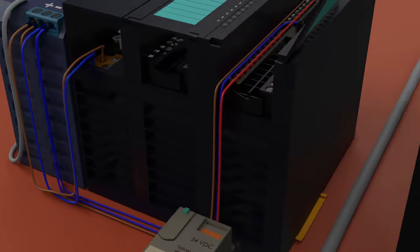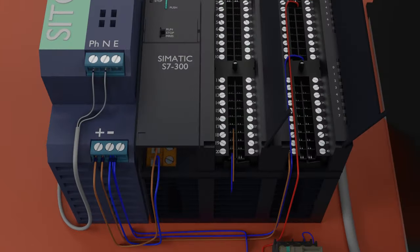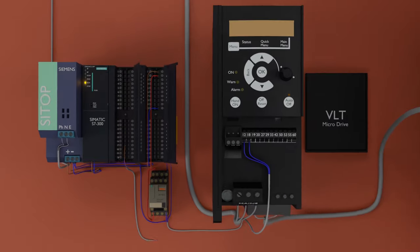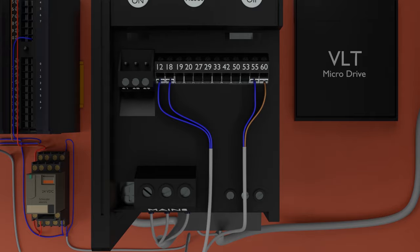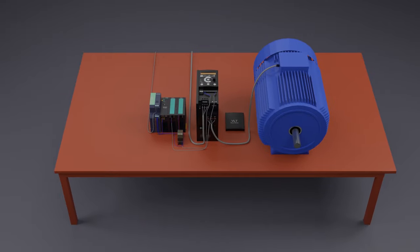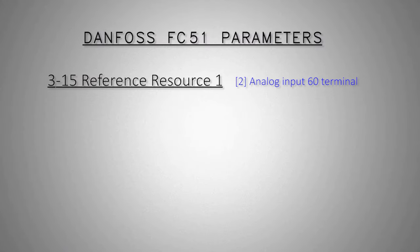Analog output signal wiring is very easy. We will connect analog output terminals 17 and 20 to the analog input terminals 55 and 60 of the VFD. Now the wiring is completed. Let's discuss a few parameters of the VFD which we have to change to configure the VFD's analog input as a speed reference. We can use parameter 3-15 reference source to configure this analog input as a frequency reference input. We can select 2 to configure this analog input as a reference frequency source.